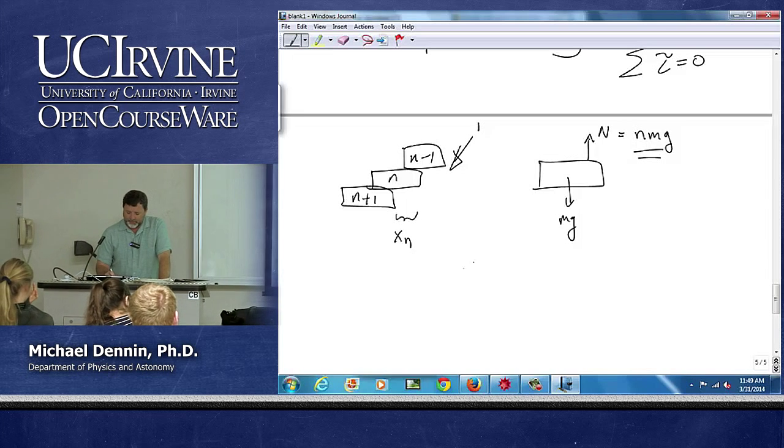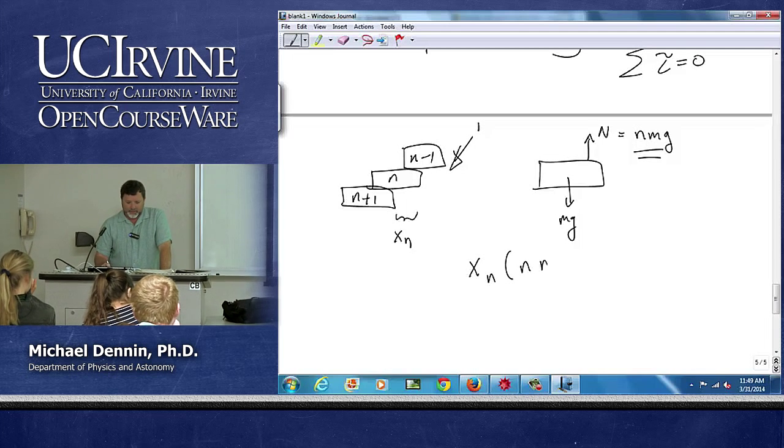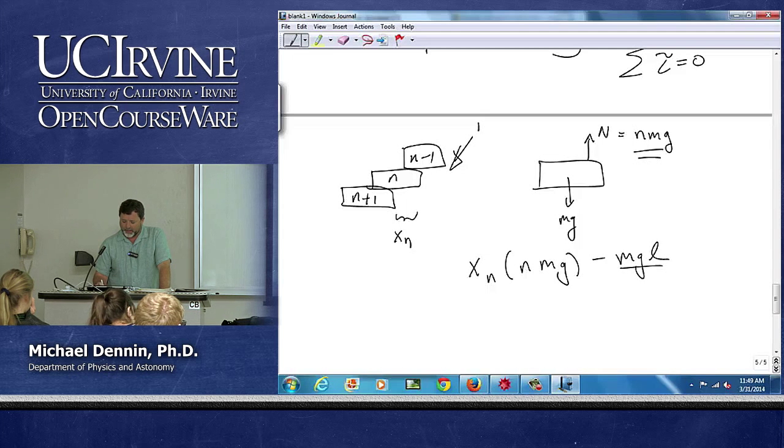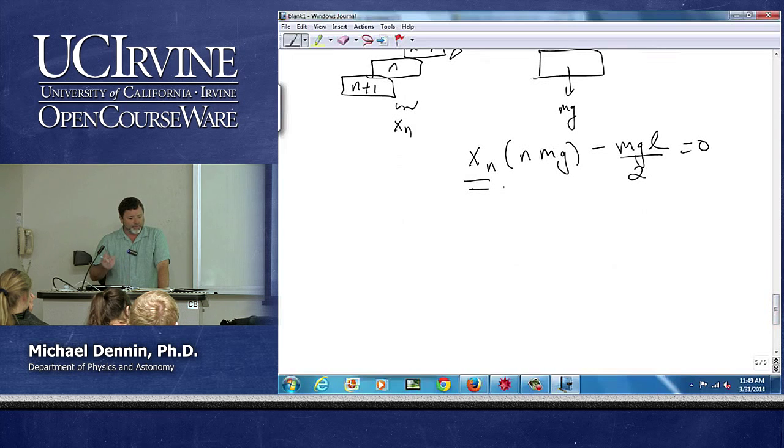And so if I'm going to balance torques, I have an xn, that's where the normal force is acting, times the value of the normal force is going to balance mgL over 2. So the series I'm going to get out that I have to sum will go as L over n.